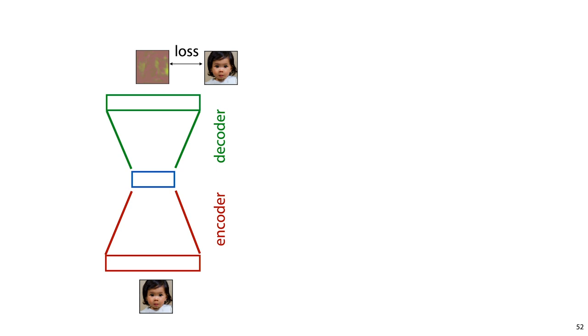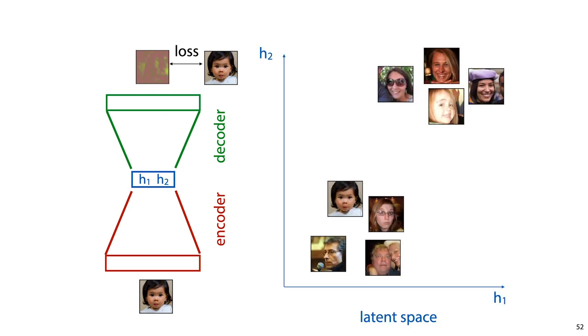We call the blue layer the latent representation of the input. If we train an autoencoder with just two nodes on the latent representation, then we can plot what latent representation each input is assigned in the latent space. If the autoencoder works well, we expect to see similar images clustered together.